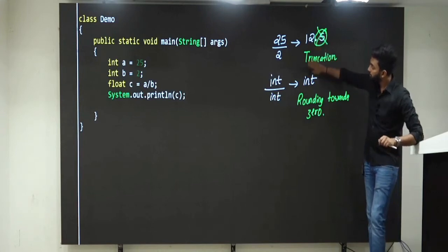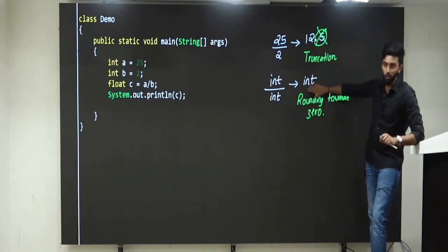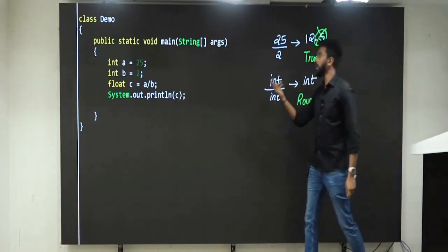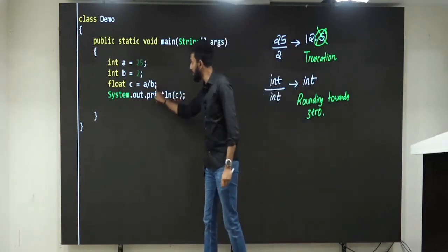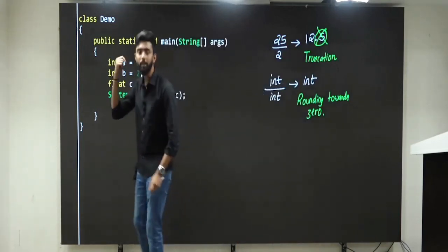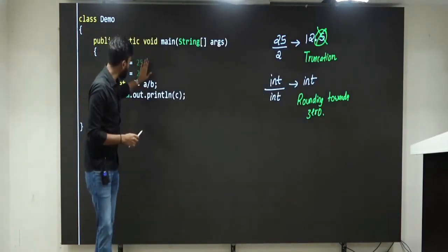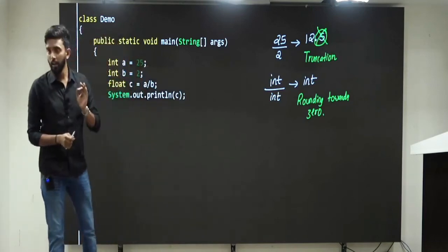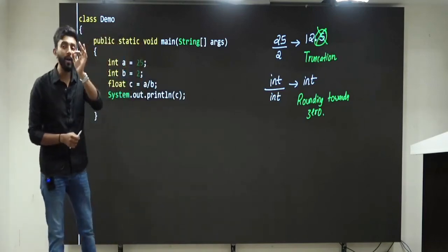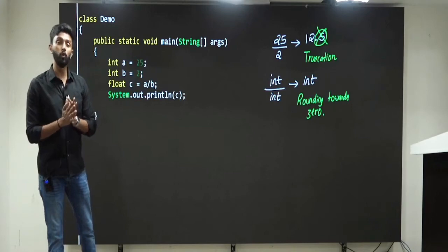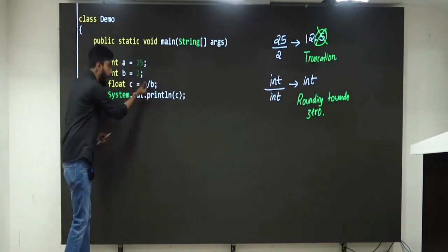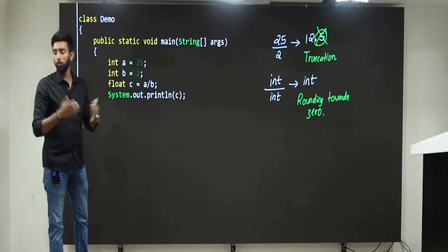My friends, this one fundamental concept, if you don't know, you will not understand why your program is never giving the output you expected. Because you expected 12.5, but what you got was 12. But some of you will be like, but sir, I want 12.5, sir, what to do?